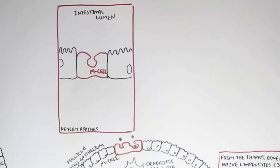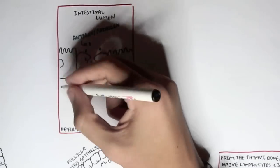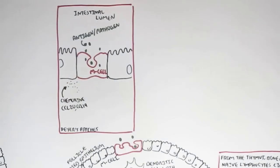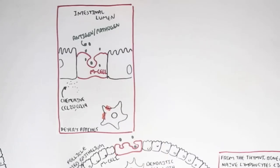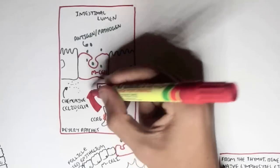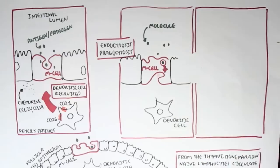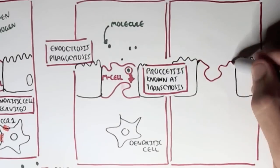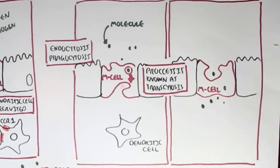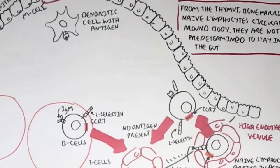These chemokines attract not only lymphocytes but also dendritic cells, via receptors CCR6 and CCR1. So the dendritic cells know that an antigen is present and that the M cell is about to take it up. The M cell takes it up through phagocytosis, also known as endocytosis, and the process by which it is transported from the lumen to the Peyer's patches is known as transcytosis — trans meaning across. So it transports the antigen from the lumen to the Peyer's patches, where the dendritic cells can engulf it and present it on the major histocompatibility complex to the adaptive immune cells.